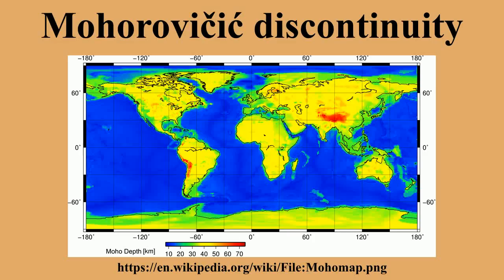The Mohorovicic discontinuity is 5 to 10 km below the ocean floor and 20 to 90 km, with an average of 35 km, beneath typical continents.